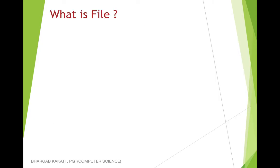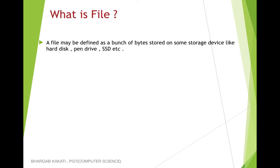We are going to discuss the topics highlighted in red. So, what is a file? A file may be defined as a bunch of bytes stored on some storage device like a hard disk, pen drive, SSD, etc. If you write a letter in MS Word and store it on your hard disk, it is called a file. If you write a Python program and store it, that is also called a file. Within the file, from a memory perspective, it is a bunch of bytes stored in that form.